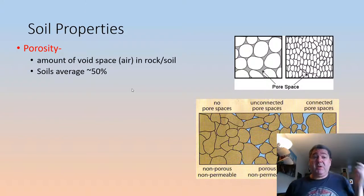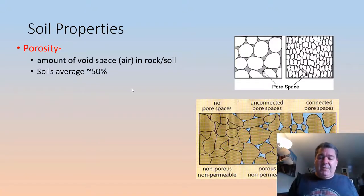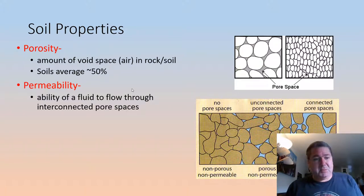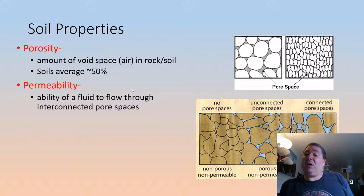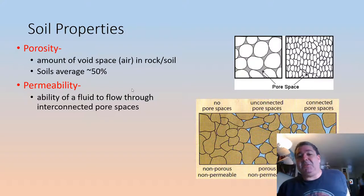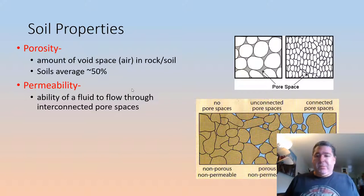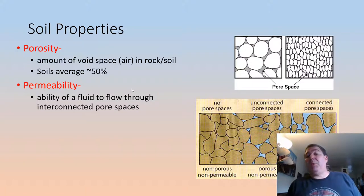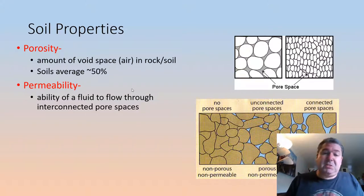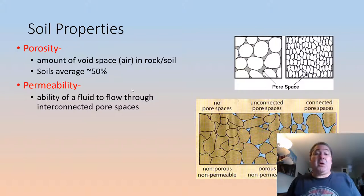Soils on average are about 50% void space and about 50% stuff. Permeability is related to this, but it's basically a measure of how interconnected those pore spaces are. It doesn't really matter if you have pore spaces if they're not connected — the water and air can't go anywhere. If they're nice and connected, highly permeable, it's going to flow easily through there and lead to high hydraulic conductivity.